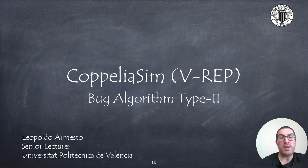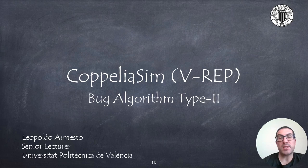Well, in this video I have explained how to implement Bug Type 2 algorithm in CoppeliaSim using proximity sensors to avoid obstacles. Now your task is to implement the code that I have provided and complete all missing parts, as well as properly adjust the parameters so it works as shown in the following video. Thank you very much.